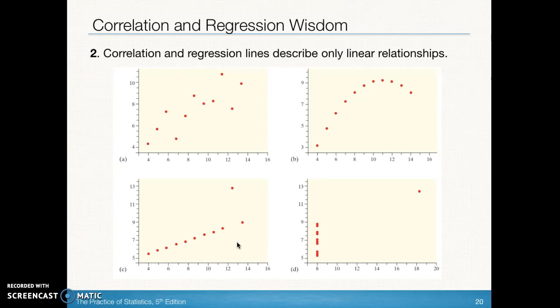All of these happen to have the same r value and the same least squares regression line. So you have to see to know that only in graph a would a linear model be appropriate. You can see they all have the same r, they all have the same regression line. Some of you may remember we did this lab in class, but there's only one in which the linear model is appropriate and remember we also have to look at the residual plot in order to determine that.